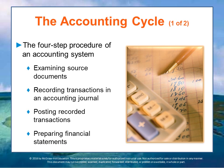In any accounting system, financial data passes through a four-step procedure called the accounting cycle. The steps include: examining the source documents — such as an invoice or a receipt from a transaction; recording the transactions in an accounting journal; posting the recorded transactions; and preparing the financial statements. This is how the accounting cycle works.